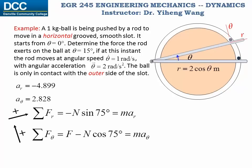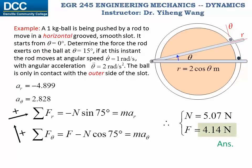Now in the two equations of motion, we know the mass is 1 kg and we know the acceleration along the radial and transverse directions. Therefore the only two unknowns are N and F, and they can be solved from these two equations to be 5.07 newtons and 4.14 newtons. This is our answer to this question.